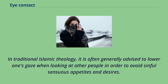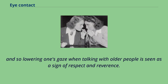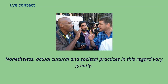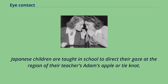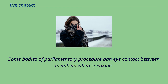In traditional Islamic theology, it is often generally advised to lower one's gaze when looking at other people in order to avoid sinful sensuous appetites and desires. Excessive eye contact or staring is also sometimes described as impolite, inappropriate, or even disrespectful, especially between youths and elders or children and their parents. Lowering one's gaze when talking with older people is seen as a sign of respect and reverence, though actual cultural and societal practices in this regard vary greatly. Japanese children are taught in school to direct their gaze at the region of their teacher's Adam's apple or nodo-chin, and as adults, Japanese lower their eyes when speaking to a superior as a gesture of respect. Some bodies of parliamentary procedure ban eye contact between members when speaking.